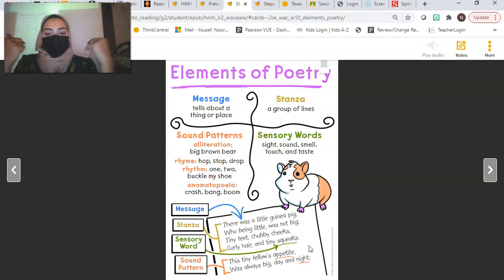Sensory words are squeak. Do we taste squeak? Do we smell squeak? Do we see squeak? Do we hear squeak? Yes. So, that's a sensory word that we can hear. And then, there's a sound pattern, which is, this tiny fellow's appetite was always big day and night. Appetite and night, what? They rhyme. There's rhyming words.